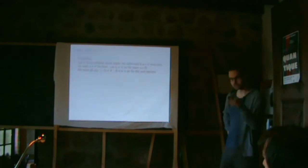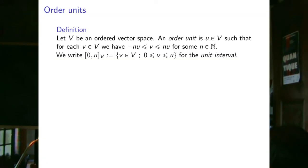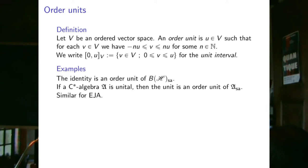A few more structures in ordered vector spaces. An order unit u is an element such that for every vector v, there is some positive scalar λ such that −λu ≤ v ≤ λu — the unit interval's linear span is the whole space. The identity operator in self-adjoint operators is an order unit. In a C*-algebra, the unit is an order unit. In Euclidean Jordan algebras, which are always unital, the unit is an order unit. In a homogeneous space, every interior positive element is an order unit.